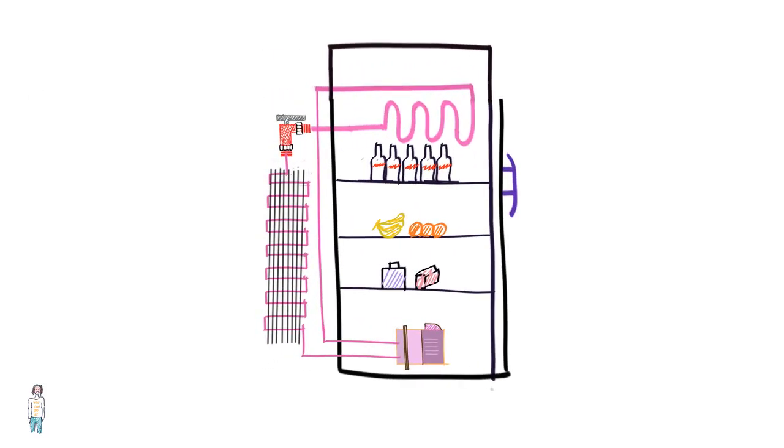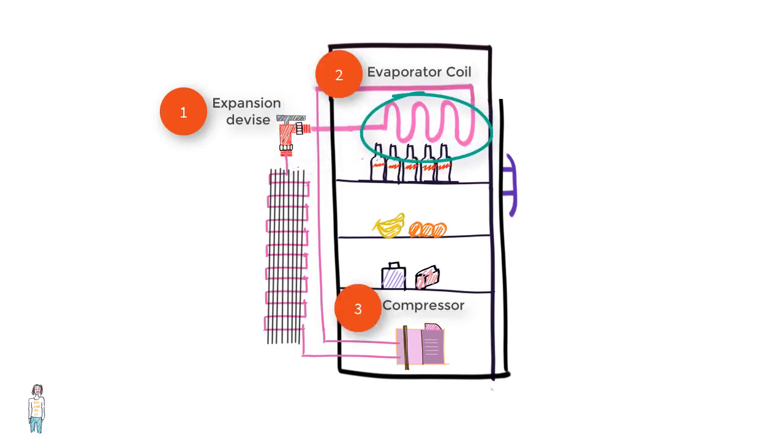There are basically five components in a refrigerator that make the refrigerator do what it does. Number one is the expansion device. Two is the evaporator coil. Number three is the compressor. Number four are condenser coils. And then you have a refrigerant, which is a liquid that enters the expansion device.